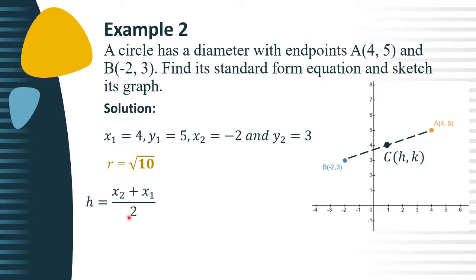For h, that equals x sub 2 plus x sub 1 over 2. Substituting, we have negative 2 for x sub 2 and 4 for x sub 1. Simplifying the equation, negative 2 plus 4 gives us positive 2 divided by 2. So h equals positive 1.